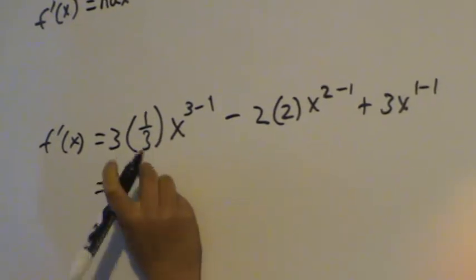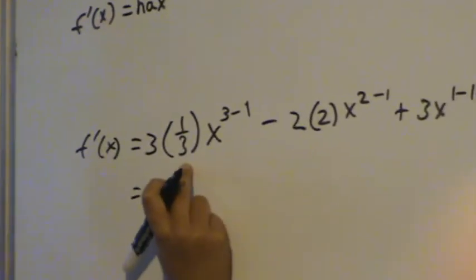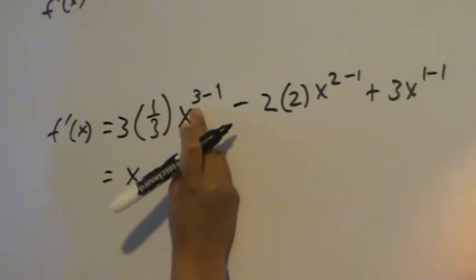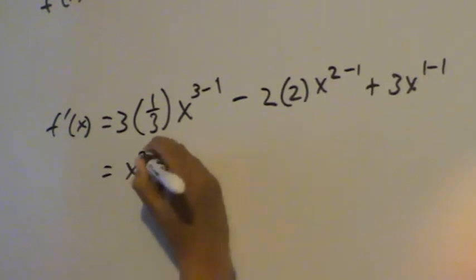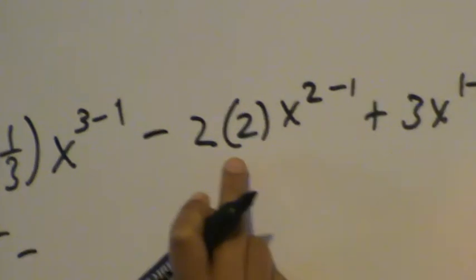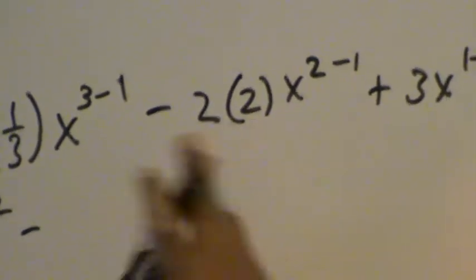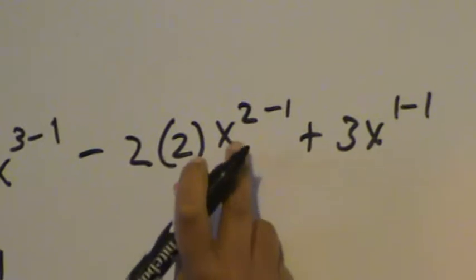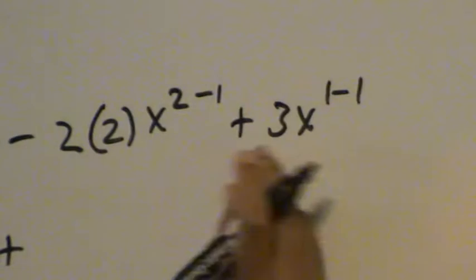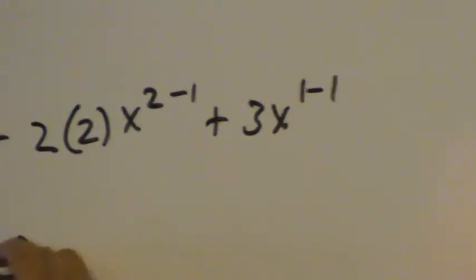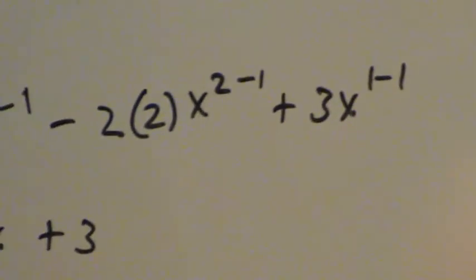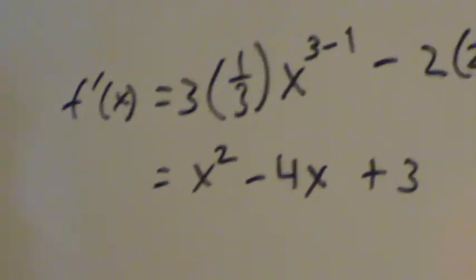Equals — I'll tidy this up. 3 by 1 over 3 is 1. 3 minus 1 is 2. And minus 2 by 2 is minus 4. x power 1, but we don't write that. Plus 3, because 1 minus 1 is 0, and anything to the power 0 is just 1. And that's the answer to the first one.